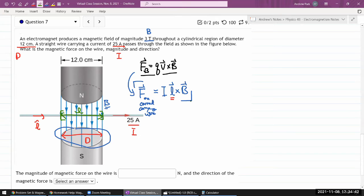So I think I have all the information I need. I have current 25 amperes. I have length 12 centimeters. I will plug it in a unit of meter 0.12 meter. So that the units just magically work out. And I have the magnetic field already in basic SI units. So the magnitude will be simply product of those three things.